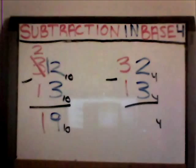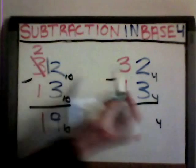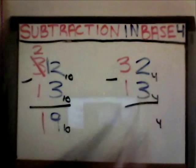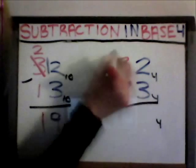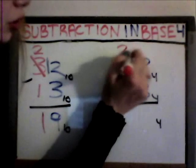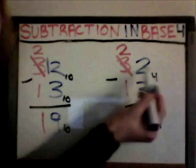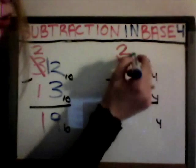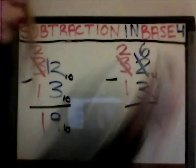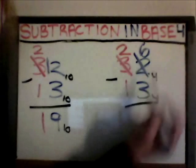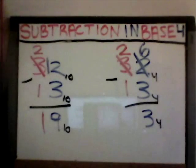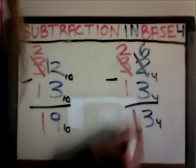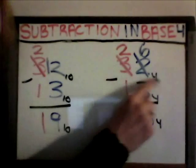The same borrowing method is used with base four. For example, thirty-two base four minus thirteen base four. Since the two is smaller than the three, you borrow from the next place value, then change this into a two. Instead of adding ten because of base ten, you add four because it's base four. So two plus four is equal to six. Six minus three is equal to three, and two minus one is equal to one. So thirty-two base four minus thirteen base four is equal to thirteen base four.